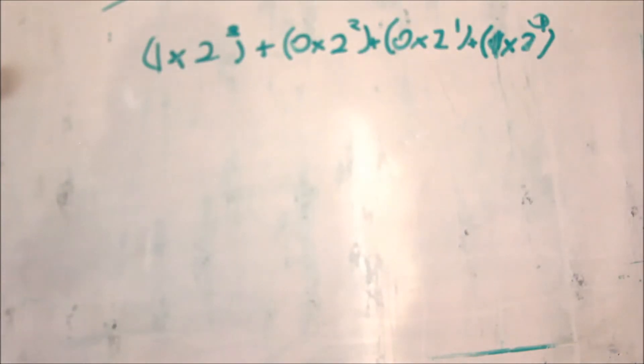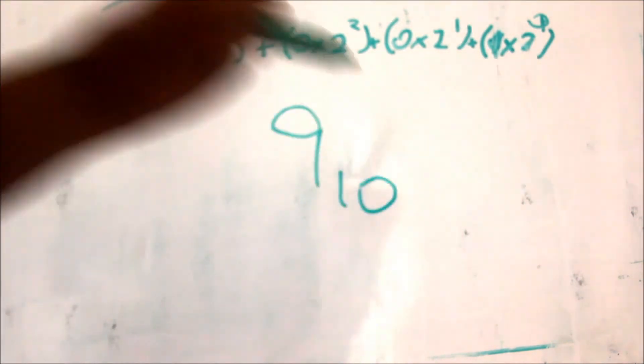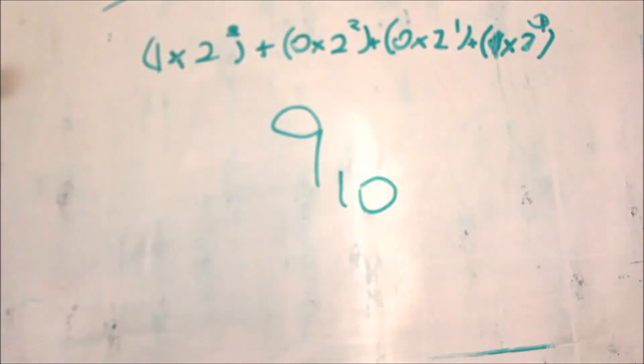So, then you take this number, and you convert it to base 10. And then, the answer you should end up with, if it were this number you were converting, would be 9 in base 10. And that's how to convert a negative number.